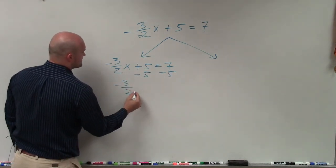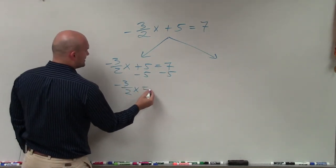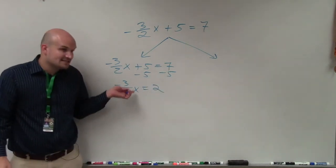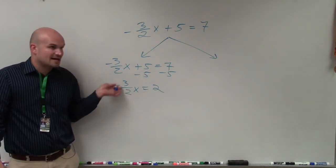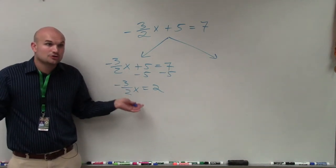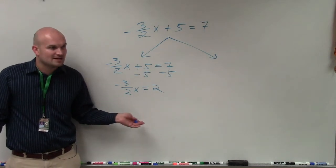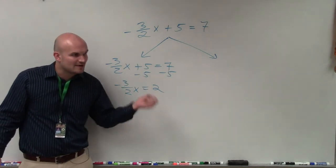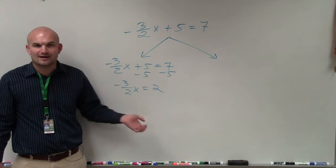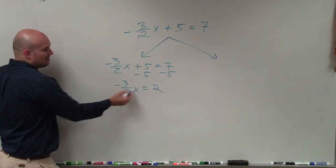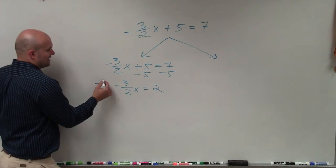So then I have -3½x equals 2. Now, I need to undo multiplying by -3½. To undo multiplying by -3½, I have to divide by -3½. But we don't like dividing by fractions. Instead of dividing by fractions, we multiply by the reciprocal. And since we want our x to be positive, I'm going to multiply by the negative reciprocal.